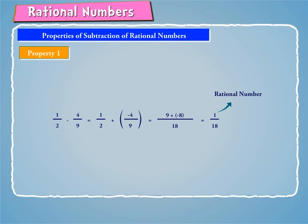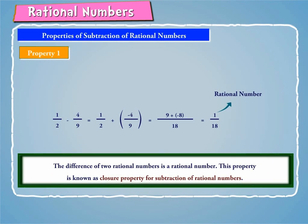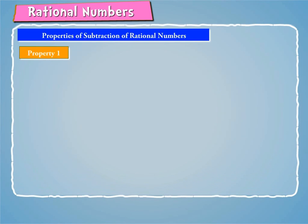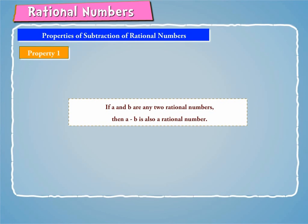The result 1/18 is a rational number. Hence, the difference of two rational numbers is a rational number. This property is known as the closure property for subtraction of rational numbers. Thus, if a and b are any two rational numbers, then a minus b is also a rational number.